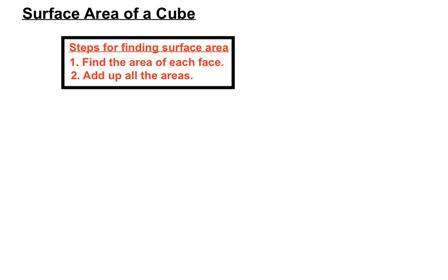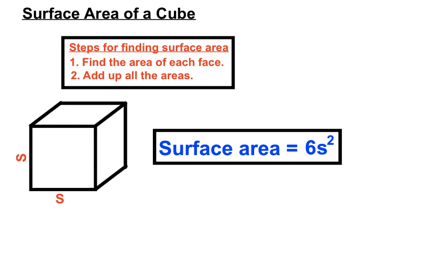So the steps for finding surface area that we went through: we found the area of each face, and we added up all those areas. In this case, because the faces were the same size as each other, we found the area of one face and we multiplied by how many faces there were. In this case, the surface area was six times S squared, S being the side length.